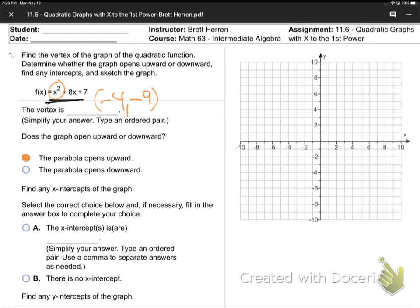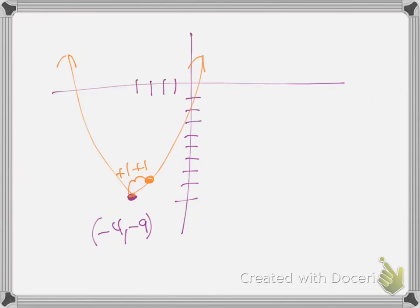Next question: find x-intercepts. That's new. How do we find x-intercepts? What is an x-intercept? Here's the graph - do you see them? We're talking about this point here and this point here - the places where the graph hits the x-axis. The sideways one is the x-axis, the vertical one is the y. So where does our graph hit the x-axis? Those are the x-intercept points.